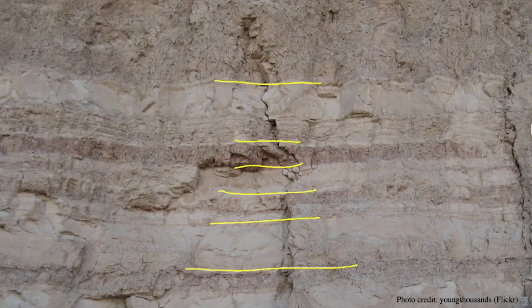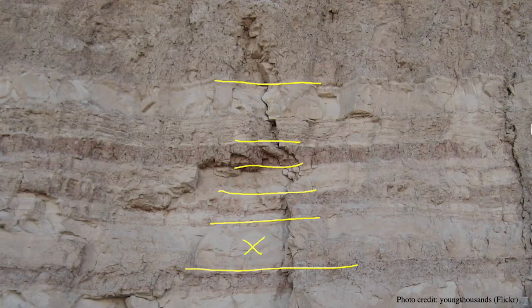Here you see in this image a series of layers across a stratigraphic profile. As we begin to think about the relative age of specimens, it's important to note that as these sediments accumulate over time, the oldest ones are at the bottom and the youngest ones are at the top. So as a general rule of thumb, the deeper you go into a sedimentary context, the further back in time you go.